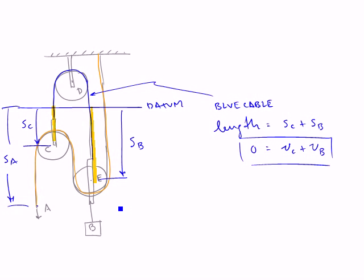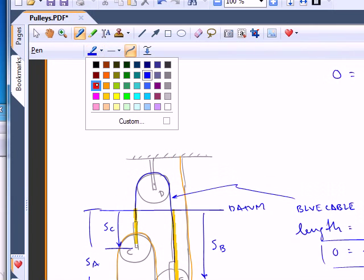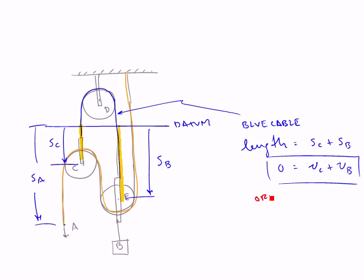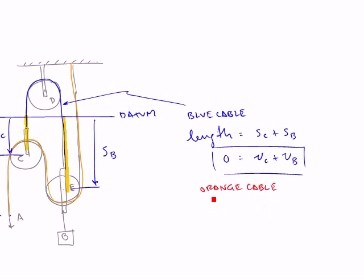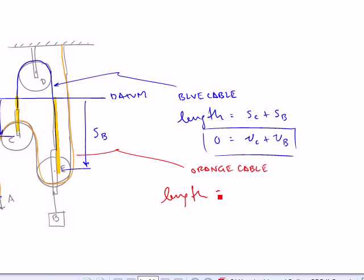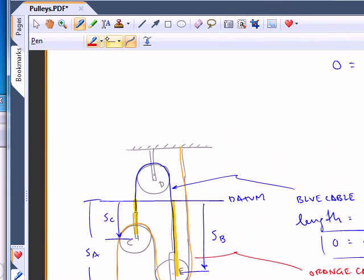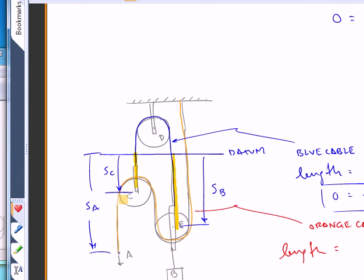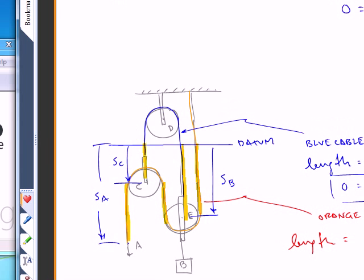Now, we would be interested in this problem in relating the motion of A to the motion of B. So let's consider the other cable. And now we'll talk about the orange cable. My wife says I'm colorblind. I know this is not orange I'm using, but you all are going to be printing this out later. So that orange cable, what makes up its length? We have SA minus SC. Okay. So we have SA minus SC. We have SB minus SC. And we have an SB.